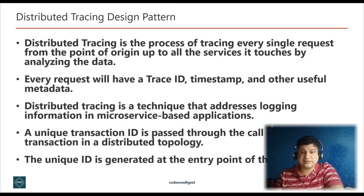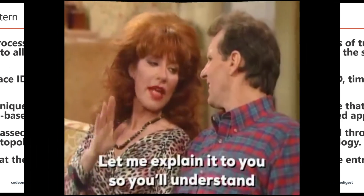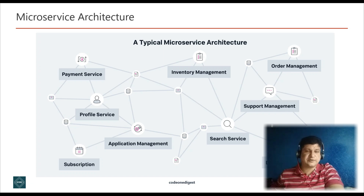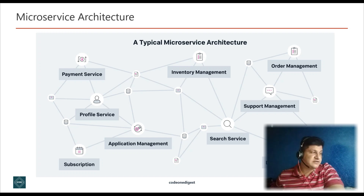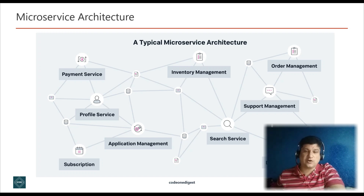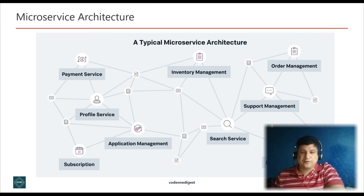Distributed tracing is a method of tracking application requests as they flow from the front-end user interface to the backend services and databases. Developers can use distributed tracing to troubleshoot requests that exhibit high latency or errors. In a typical microservice architecture, one microservice calls other microservices and they are interconnected in the form of a mesh network. A call may start from one service and end at another service, so in order to trace the journey of a user we need the distributed tracing design pattern.